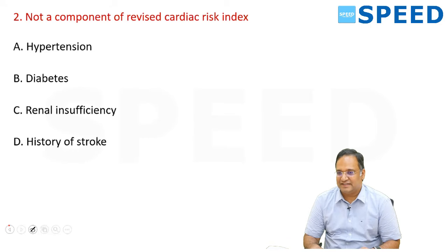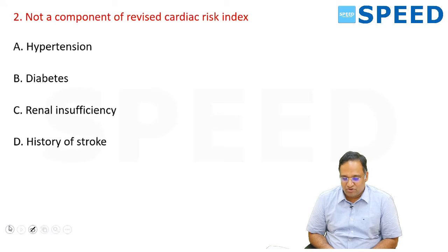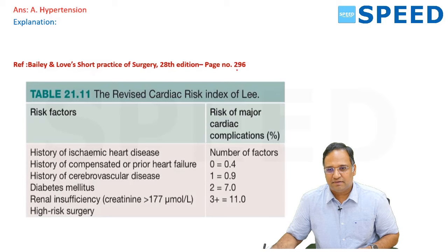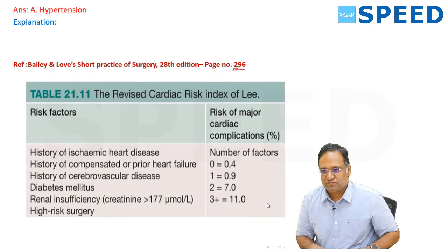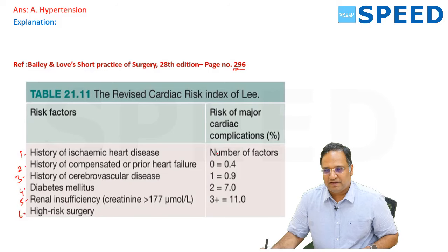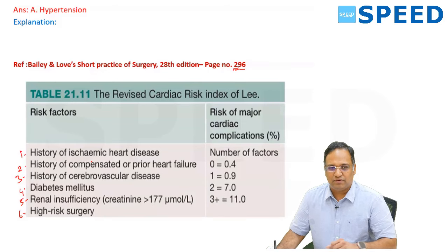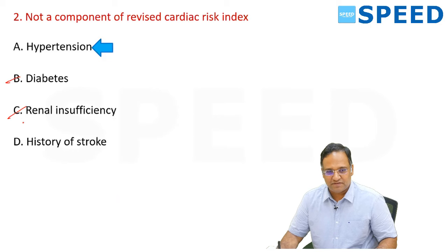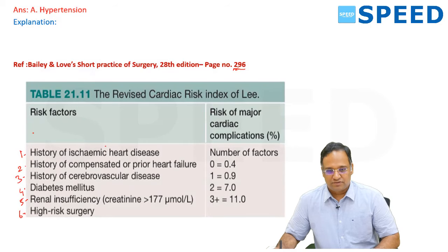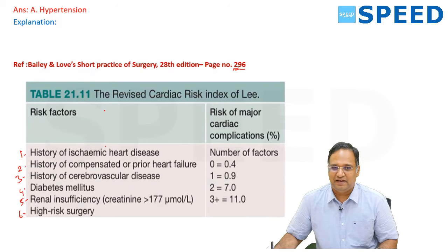Next question from the INSS November General Surgery exam: what is not a component of the revised cardiac risk index? The right answer is hypertension. This is from Bailey and Love, 28th edition, page 296. The components of the revised cardiac risk index of Lee are: history of ischemic heart disease, compensated or prior heart failure, cerebrovascular disease, diabetes, renal insufficiency, and high-risk surgery. Hypertension is not a part of this index.